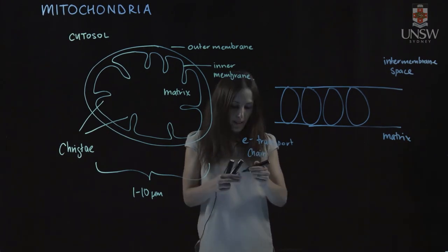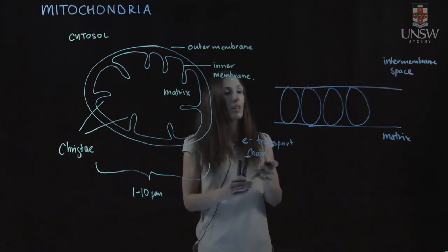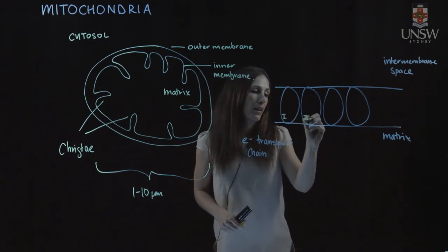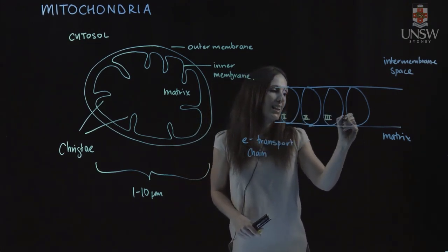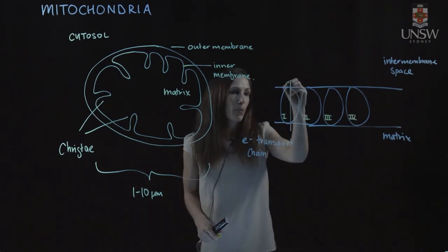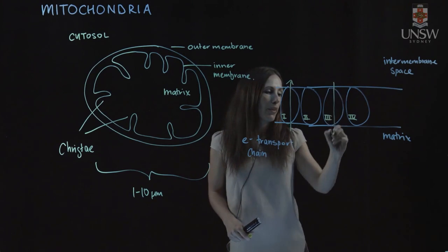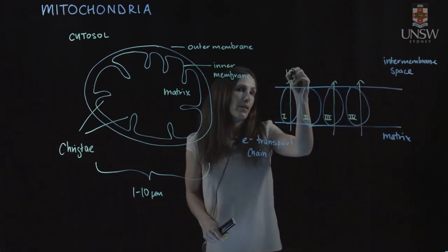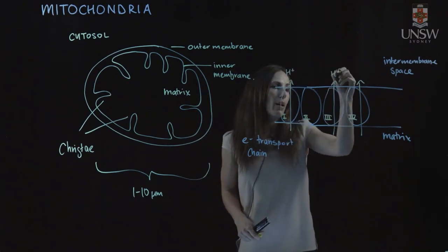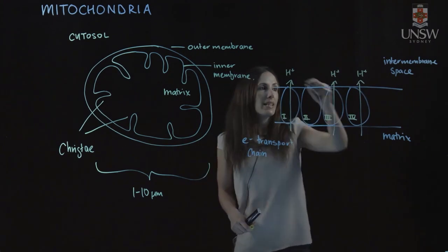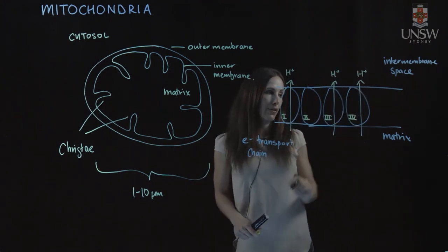So what do these proteins do? So complexes one, and then complex three, and complex four are involved in transporting protons from the matrix out into the inter-membrane space. So they're moving them out here, and that means we have a higher concentration of protons outside in the inter-membrane space than we have in the matrix.